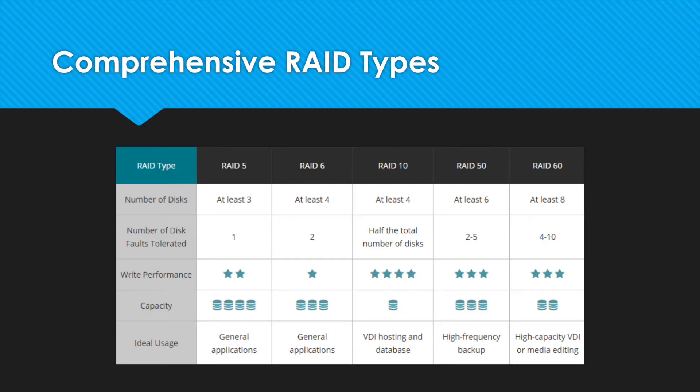Now, with the support of RAIDs 50 and 60, you have even more options to match your scenario. You don't want to be stuck compromising on your storage when choosing a RAID array. Now you can find the perfect balance with large capacity, strong performance, and impeccable security. Using RAID 50 and 60 is great for NAS models with over 6 drives.